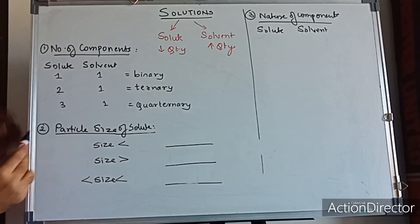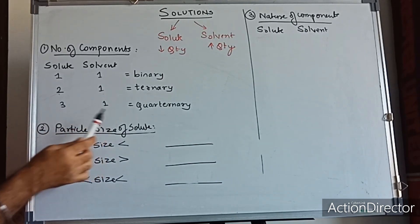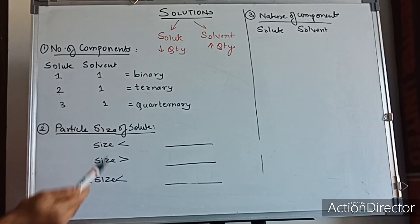Okay, so it can be the example can be salt plus water, salt plus sugar plus water, salt plus sugar plus lime plus water can be an example of a ternary solution. Now the second type is particle size of the solute.